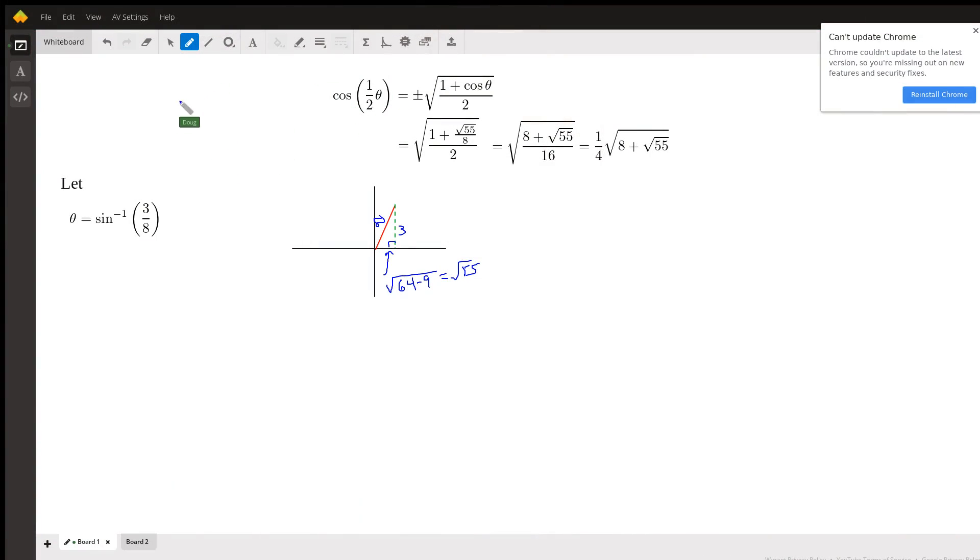Okay, we're supposed to find the exact value for the cosine of half the angle that has a sine of three-eighths. What we're going to end up using is this half-angle formula for cosine. Notice that there's a plus or minus here. You choose the plus or the minus depending on the quadrant.